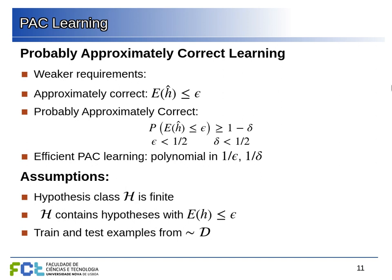This is the notion of probably approximately correct learning: with a greater than 50% probability, we obtain a hypothesis that has a true error below 50%. It seems like a modest goal, but it's more realistic than requiring zero true error. We also say we have efficient PAC learning if the computational cost of learning increases only polynomially as we decrease epsilon and delta — if we want a smaller true error with a larger probability, training time increases polynomially.